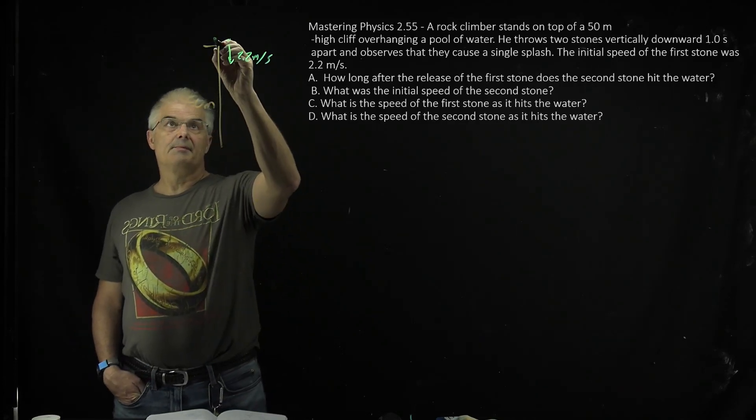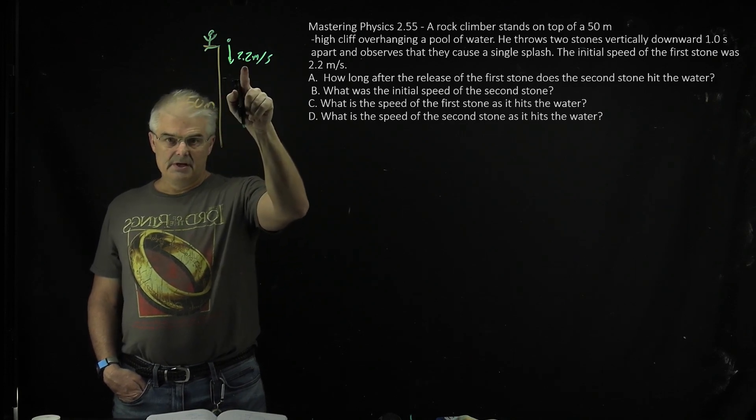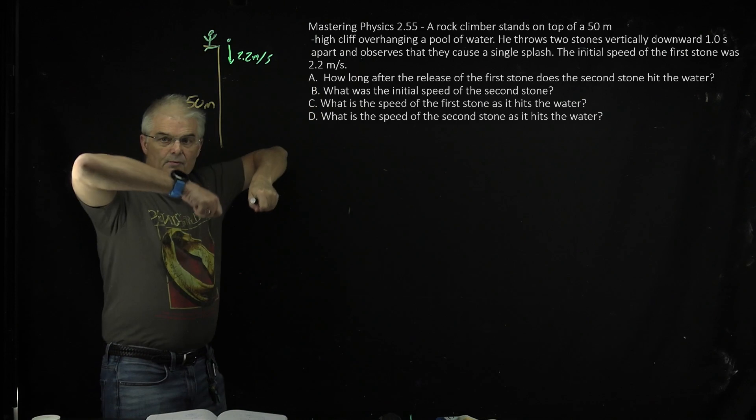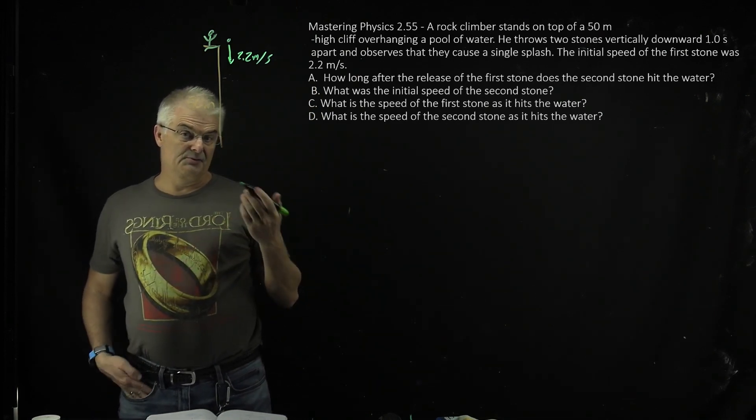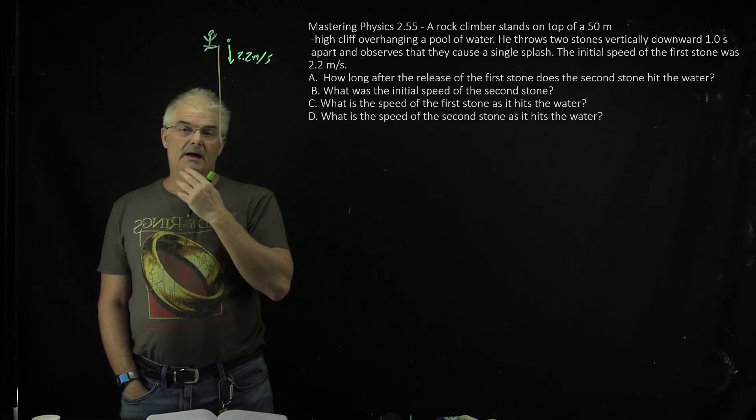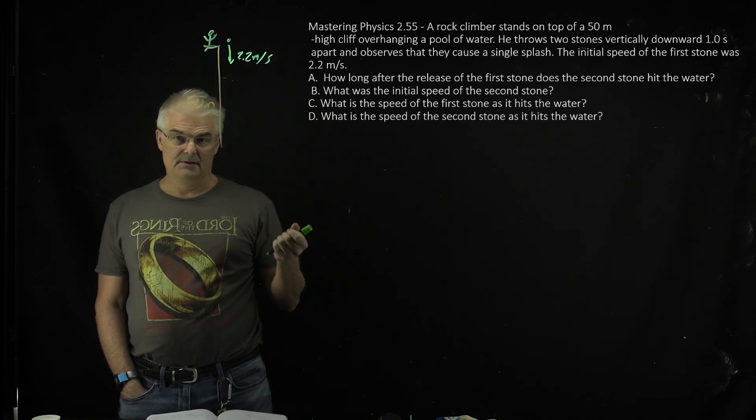So a rock climber stands on the top of a cliff, usually at the cliff, it's 50 meters tall, and he throws two stones vertically downward at a gap of one second, and then he observes that they cause a single splash. The initial speed of the first stone was 2.2. How long after the release of the first stone does the second stone hit the water?